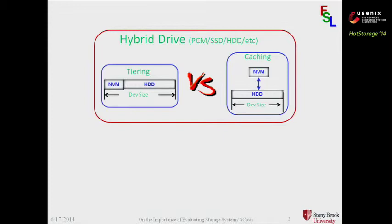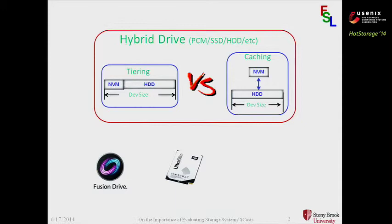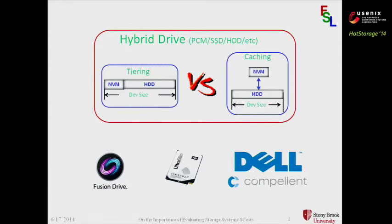One mode is tiering, where the non-volatile memory is used as primary storage. There is also a caching mode, where the non-volatile memory is used to store a data copy. Examples of those hybrids include the Apple Fusion drive, the Western Digital hybrid drive, Sony solid state drive, the Dell component hybrid flash, and actually many others.